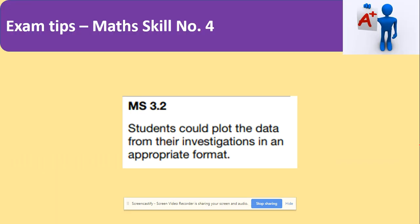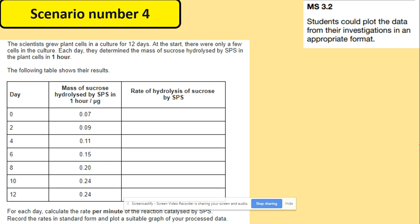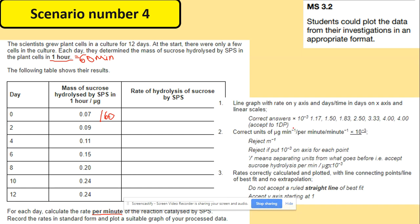The next skill is plotting graphs. For a question on rate of hydrolysis, you have mass of sucrose over time. The data is given per hour, but you need the rate per minute — so divide all values by 60. The units for rate will be micrograms per minute, derived from the mass unit (micrograms) divided by minutes.